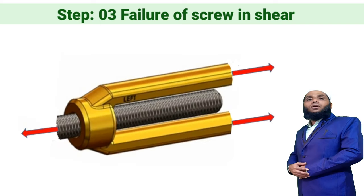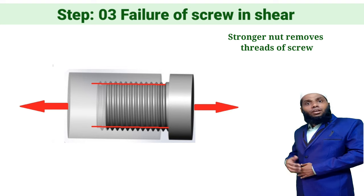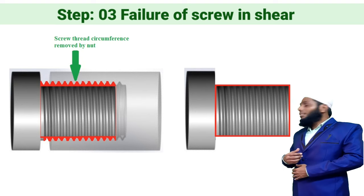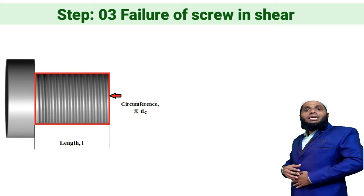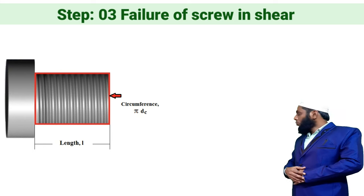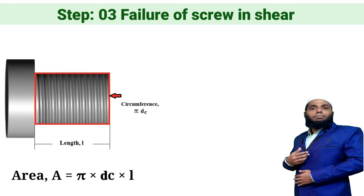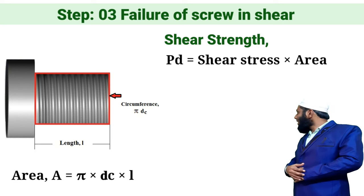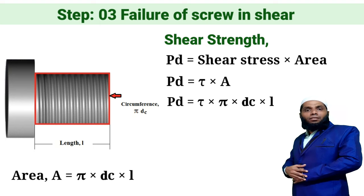Step number three is failure of the screw in shear. Due to the tensile load PD, the screw will be sheared off by the stronger nut — the coupler nut removes threads from the circumference of the screw. The area resisting this shear failure is the circumferential area of the screw thread: A = π × DC × L. Substituting this, the shear strength of the screw is: PD = τ × π × DC × L.